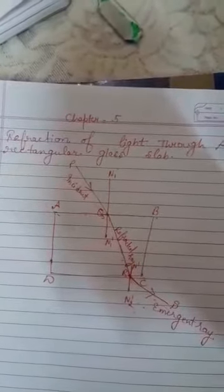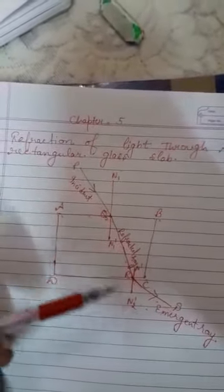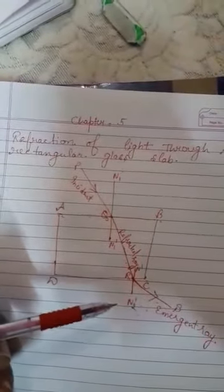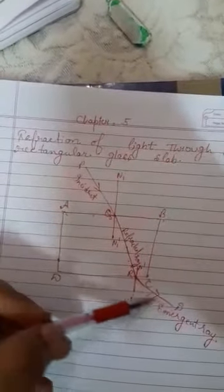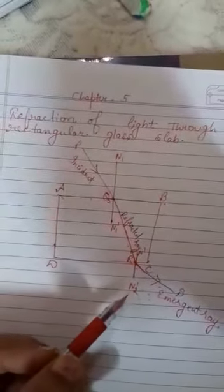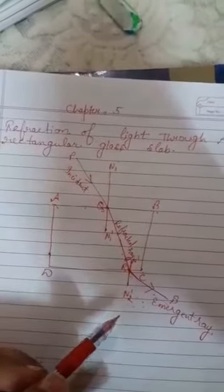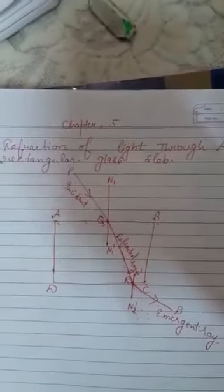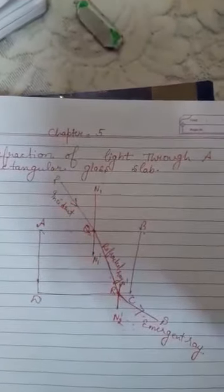The emergent ray is laterally displaced from the incident ray. This is the refraction of light through a rectangular glass slab. I hope students you understand — it is a very easy topic.